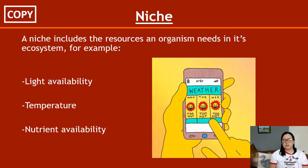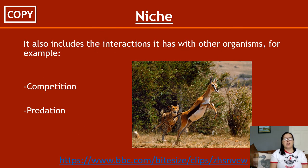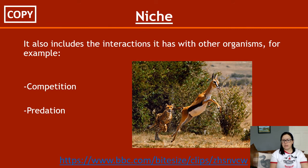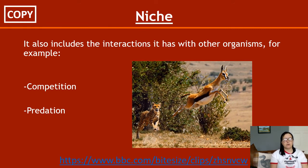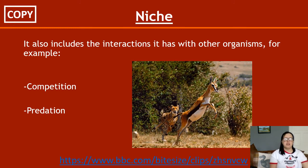A niche includes the resources an organism needs in its ecosystem — for example, light availability, temperature requirements, and nutrient availability. It also includes the interactions it has with other organisms, such as competition and predation. It's worth looking at exam questions on these, as they tend to describe the things about an organism that define its niche.